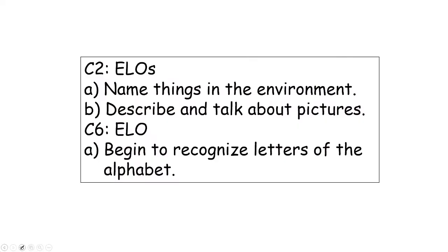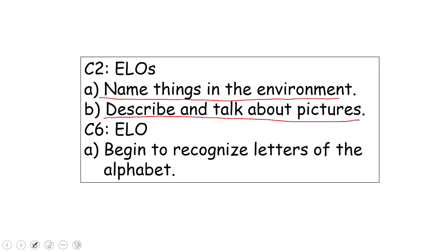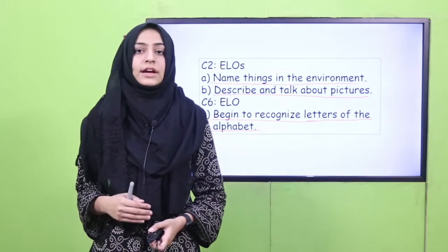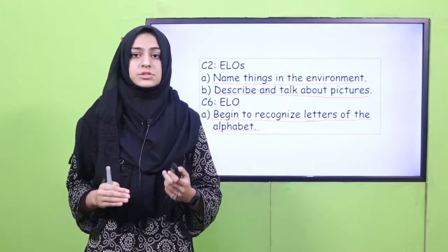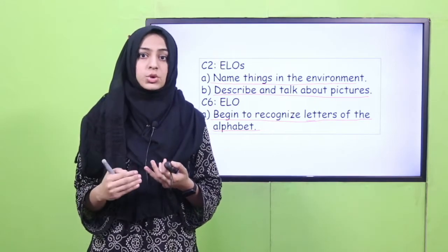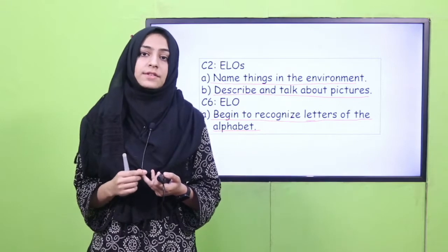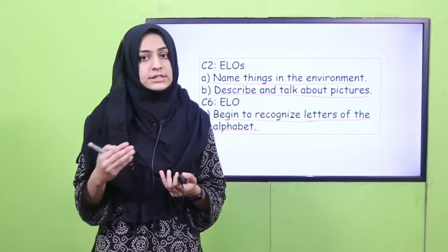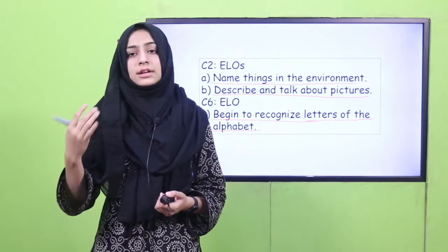First of all, after the lesson the child is expected to name the things in the environment, then describe and talk about the pictures, and then begin to recognize the letters of the alphabet and the sounds as well. One more thing I want to inform the teacher: all the resources like the PowerPoint presentations, the lesson plan, and the suggested activity — which today is a suggested story — are available in the description box. You can download them from there.